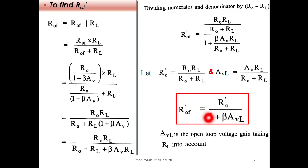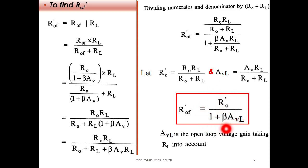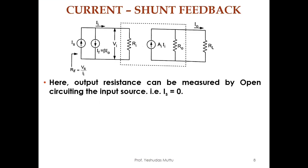From this expression, the output resistance with feedback is less than without feedback, because (1 + β·Avl) is a large term in the denominator, making Rof' smaller. That completes the derivation for voltage series feedback.